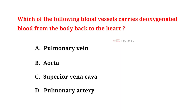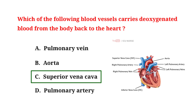Which of the following blood vessels carries deoxygenated blood from the body back to the heart? A. Pulmonary vein. B. Aorta. C. Superior vena cava. D. Pulmonary artery. And the correct answer is C. Superior vena cava. From the options given, the superior vena cava carries deoxygenated blood from the body back to the heart.